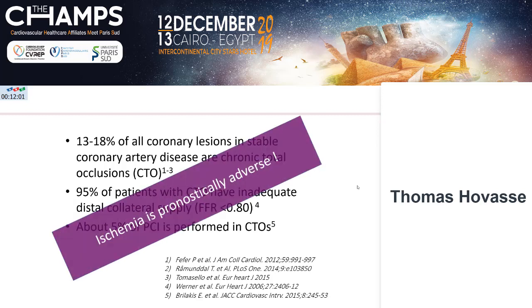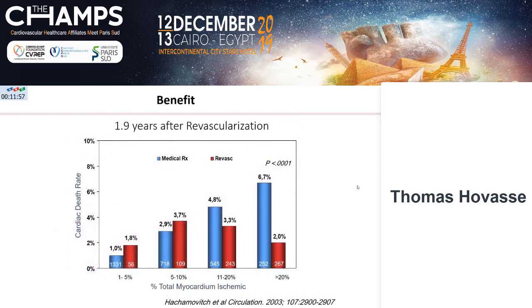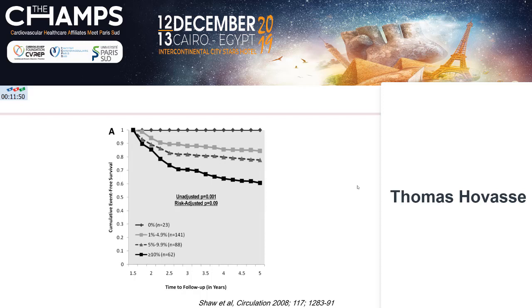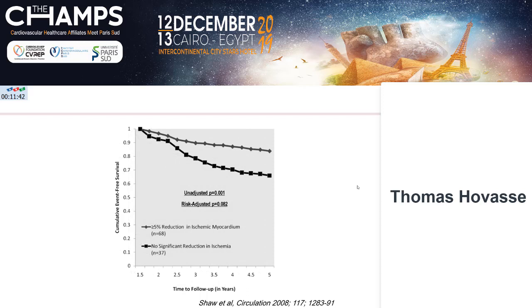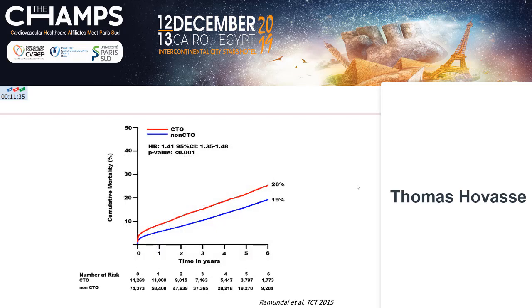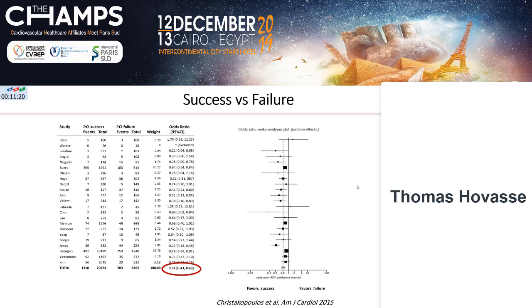We know that ischemia is prognostically adverse, that we have a benefit of revascularization on ischemia, and that we have a benefit on event-free survival with complete revascularization. This comes mostly from registries. Also, it's published that when you have a CTO and an adverse event occurs in another artery, it can often be catastrophic. And the prognosis of a patient undergoing CTO is better if you succeed than if you fail.